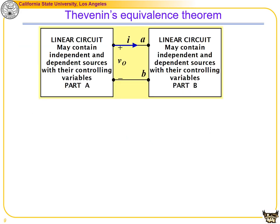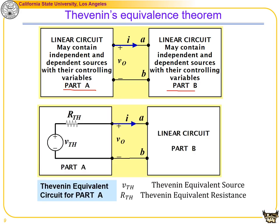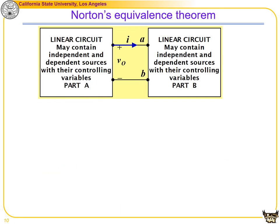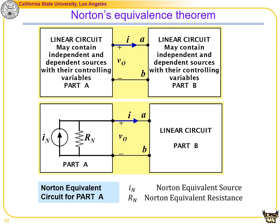The Thevenin equivalent theorem states that for any circuit broken into parts A and B, part A can always be simplified as a voltage source with a resistor in series — the Thevenin equivalent circuit. The voltage source Vth is called the Thevenin equivalent source and Rth is the Thevenin equivalent resistance. Norton's equivalent theorem simplifies part A to a current source In in parallel with a resistance Rn.